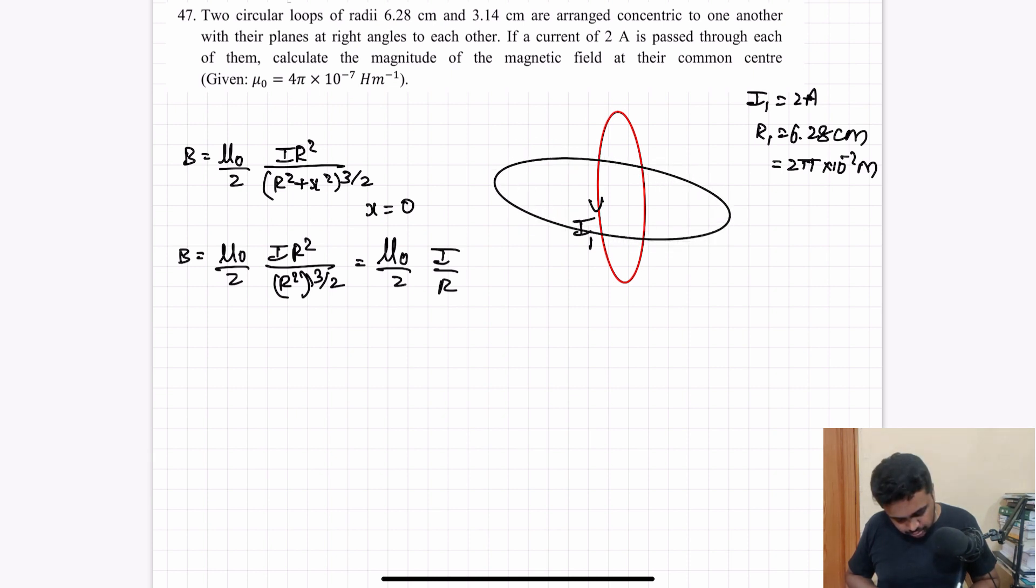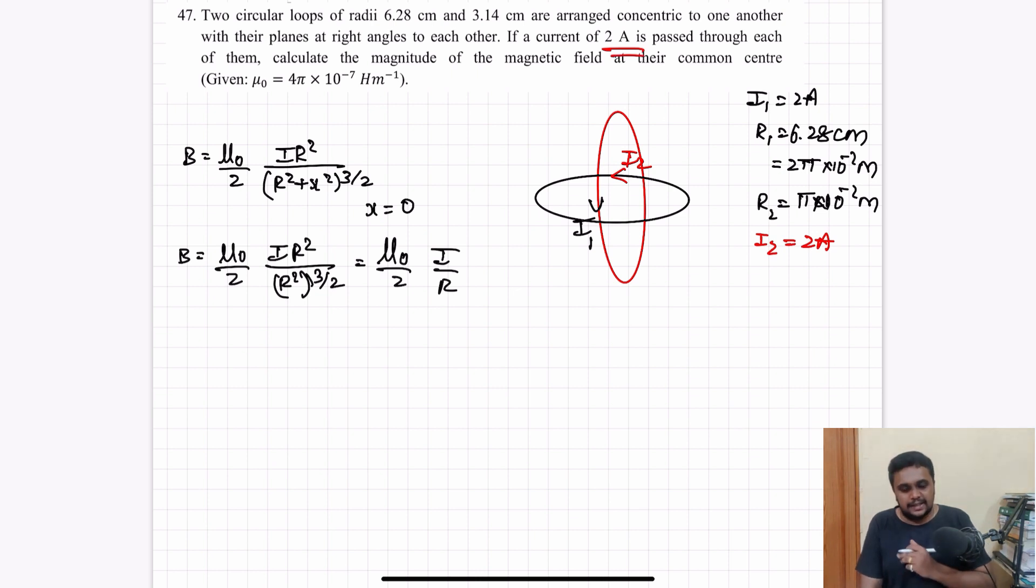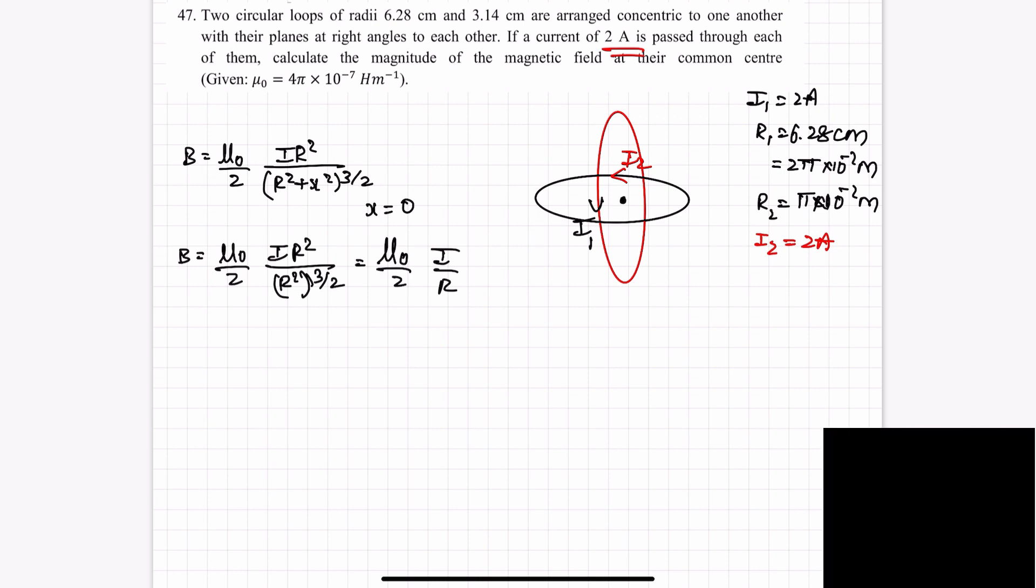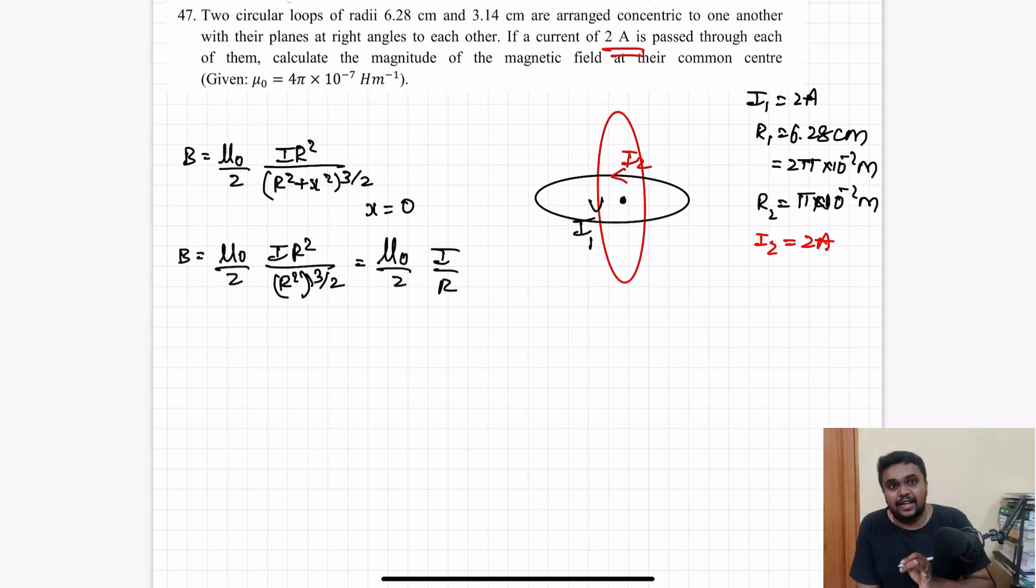There is another circular loop of radius small r2, that is 3.14, which is pi centimeter times 10 power minus 2 meter. A current I2 flows through it, with value of I2 also 2 amperes. They are concentric to each other with a common center. We need to find the resultant magnetic field at this center.